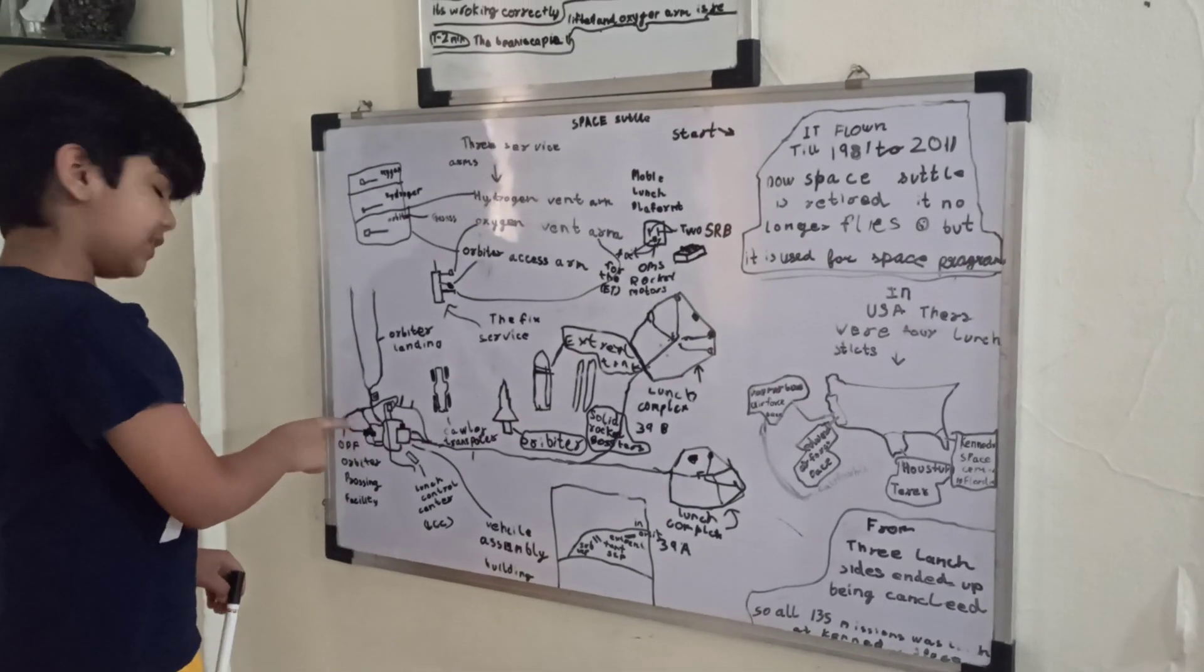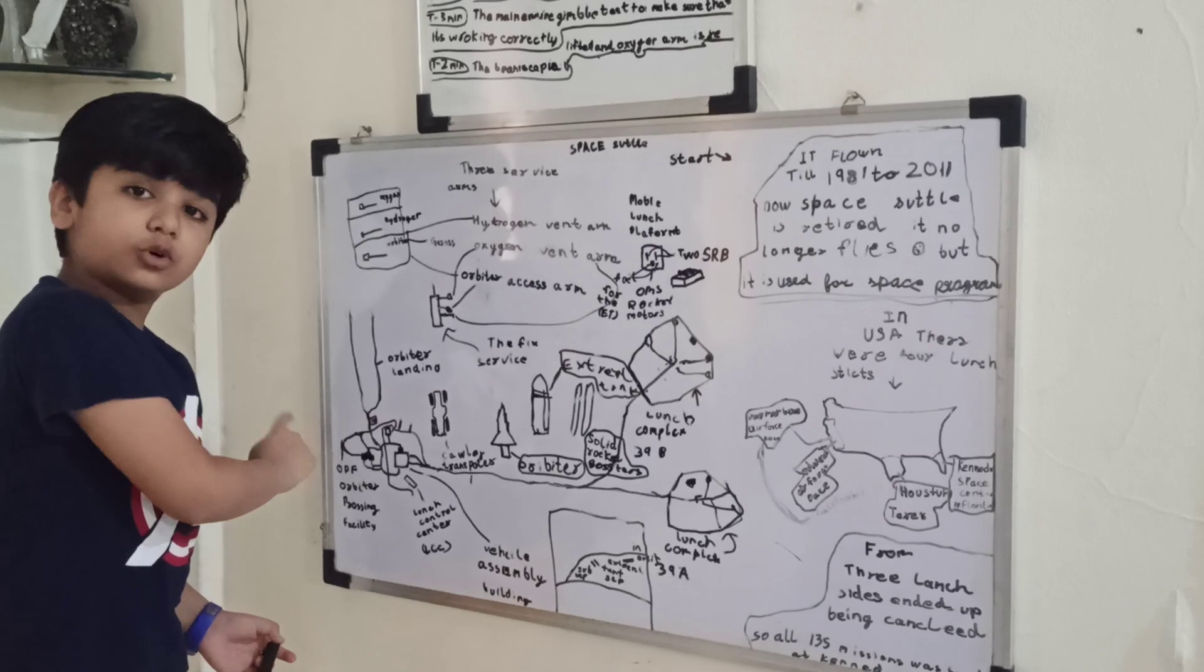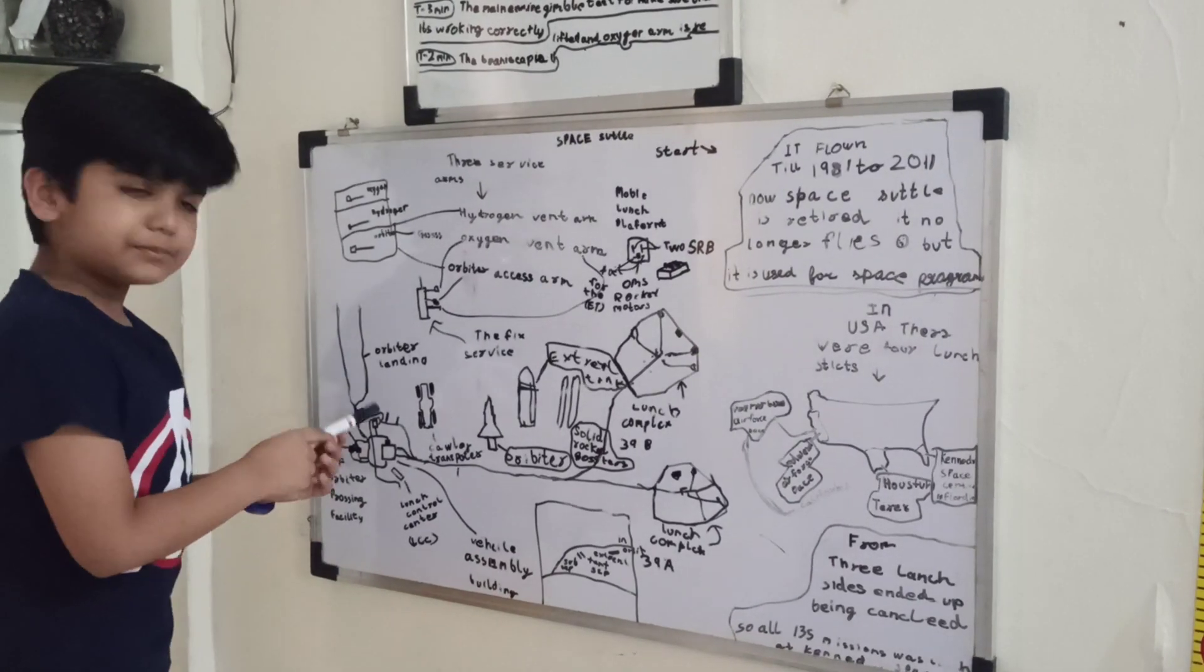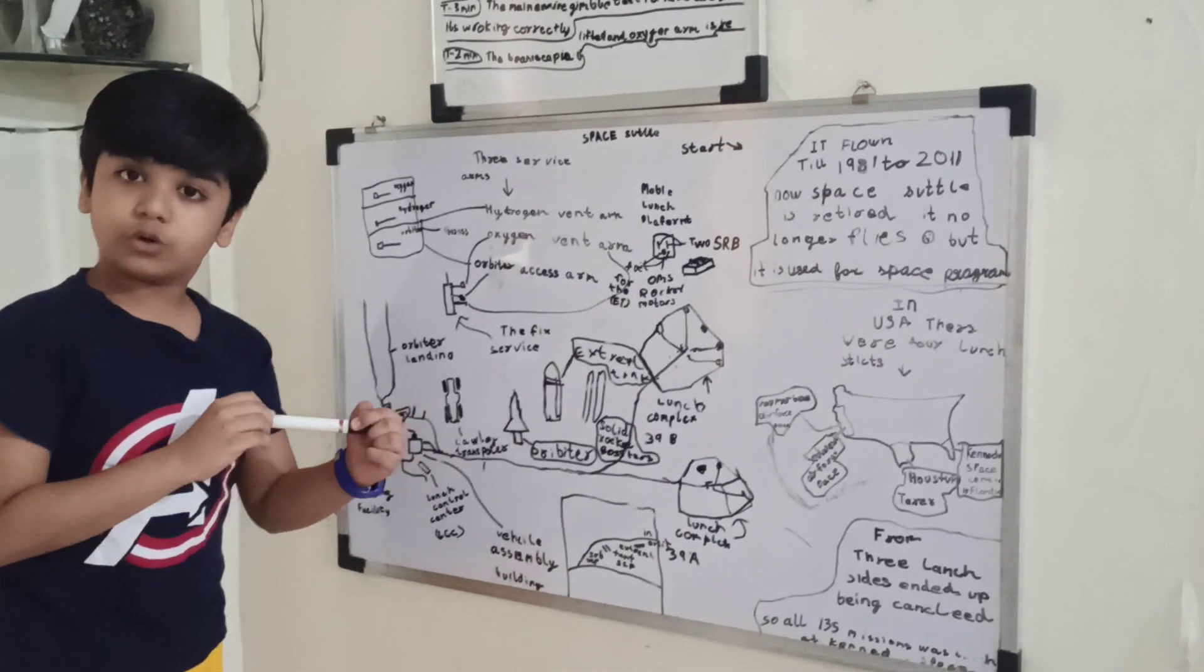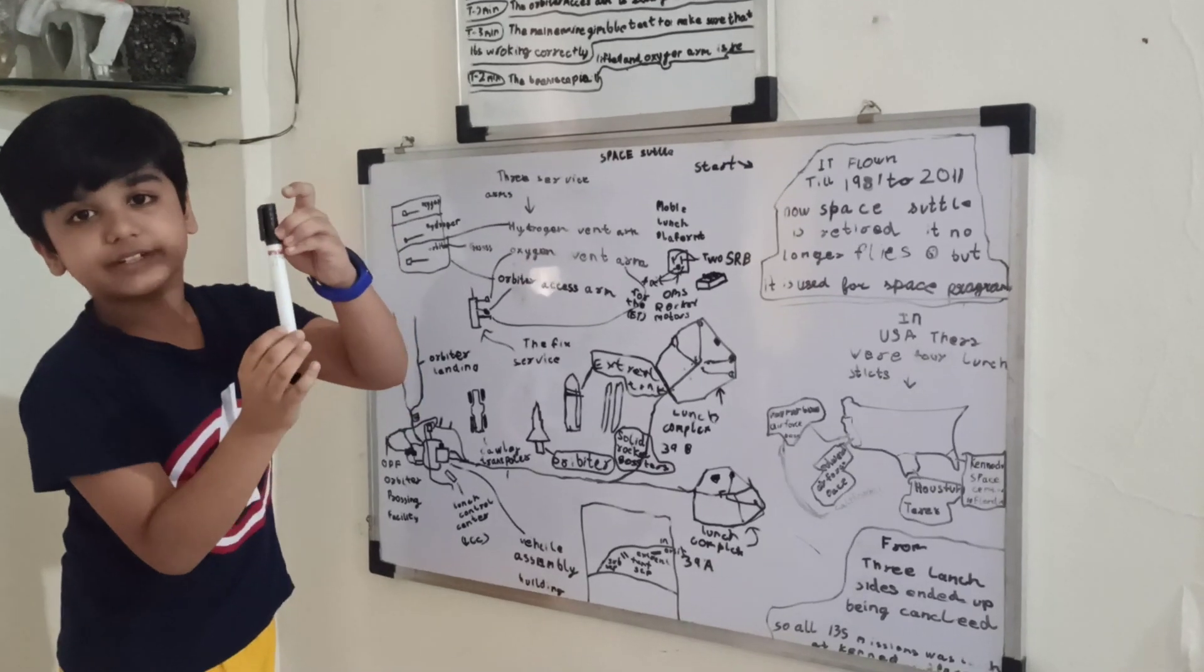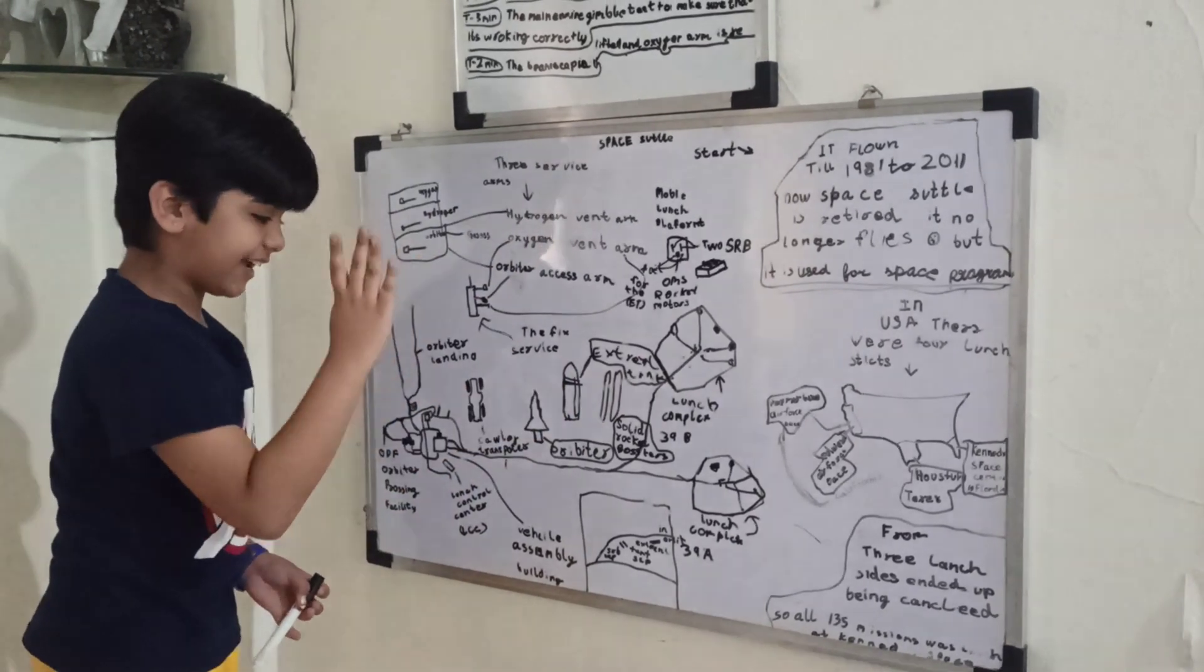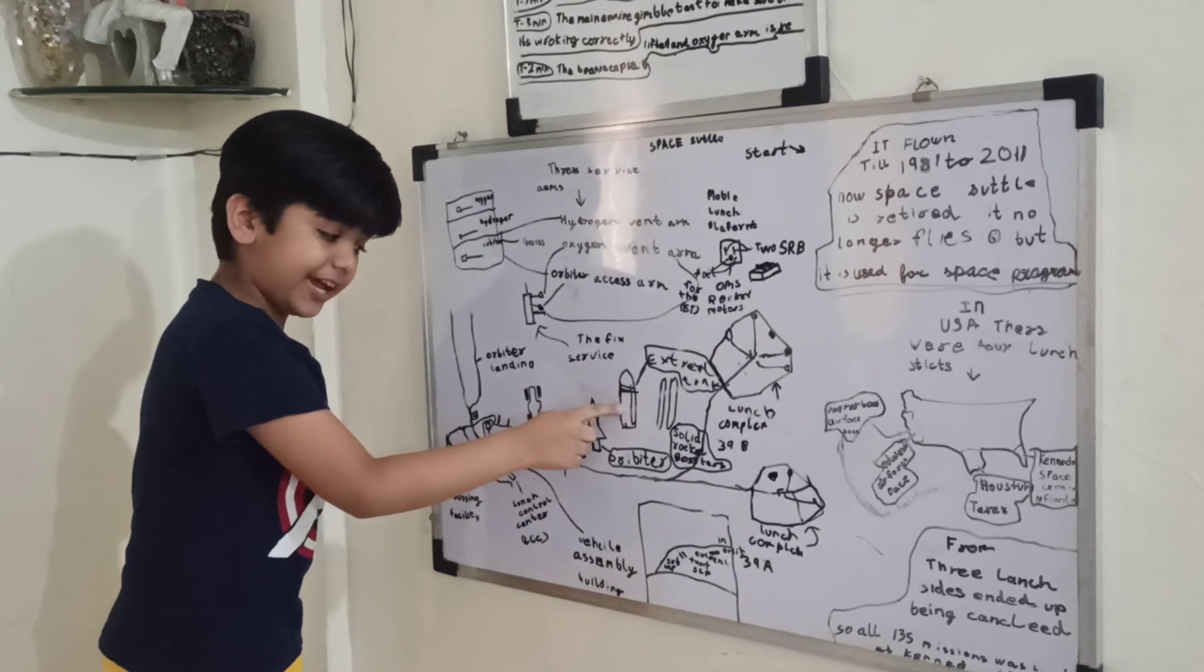Now the orbiter comes out of the OPF. The orbiter is transferred from the OPF to the VAB. First it is lifted into a crane, and when it comes in, it's called the roll-in. Now it is carried on a crane, slowly tilted to the vertical position, and then goes onto the highway, and then mounted to the side of the external tank. Fluid connections are opened to mount to the side of the external tank.